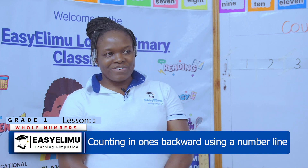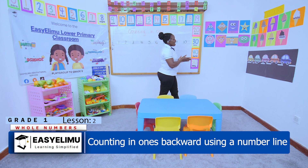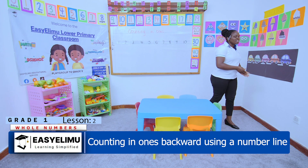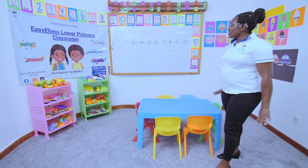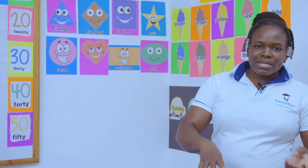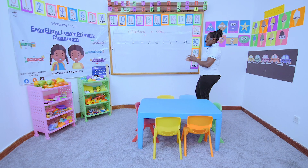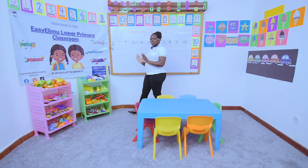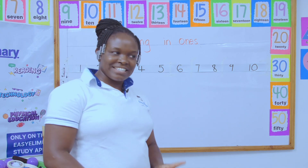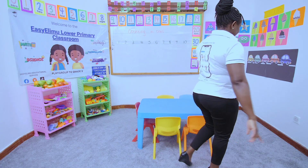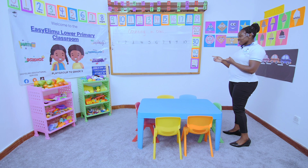We have been counting numbers in ones. This time round we did forward counting and we did very well — one, two, three. Can you remind me what the word 'forward' means? Forward means moving in the direction you are facing: one, two, three, four, five, six, seven, eight, nine, and ten.